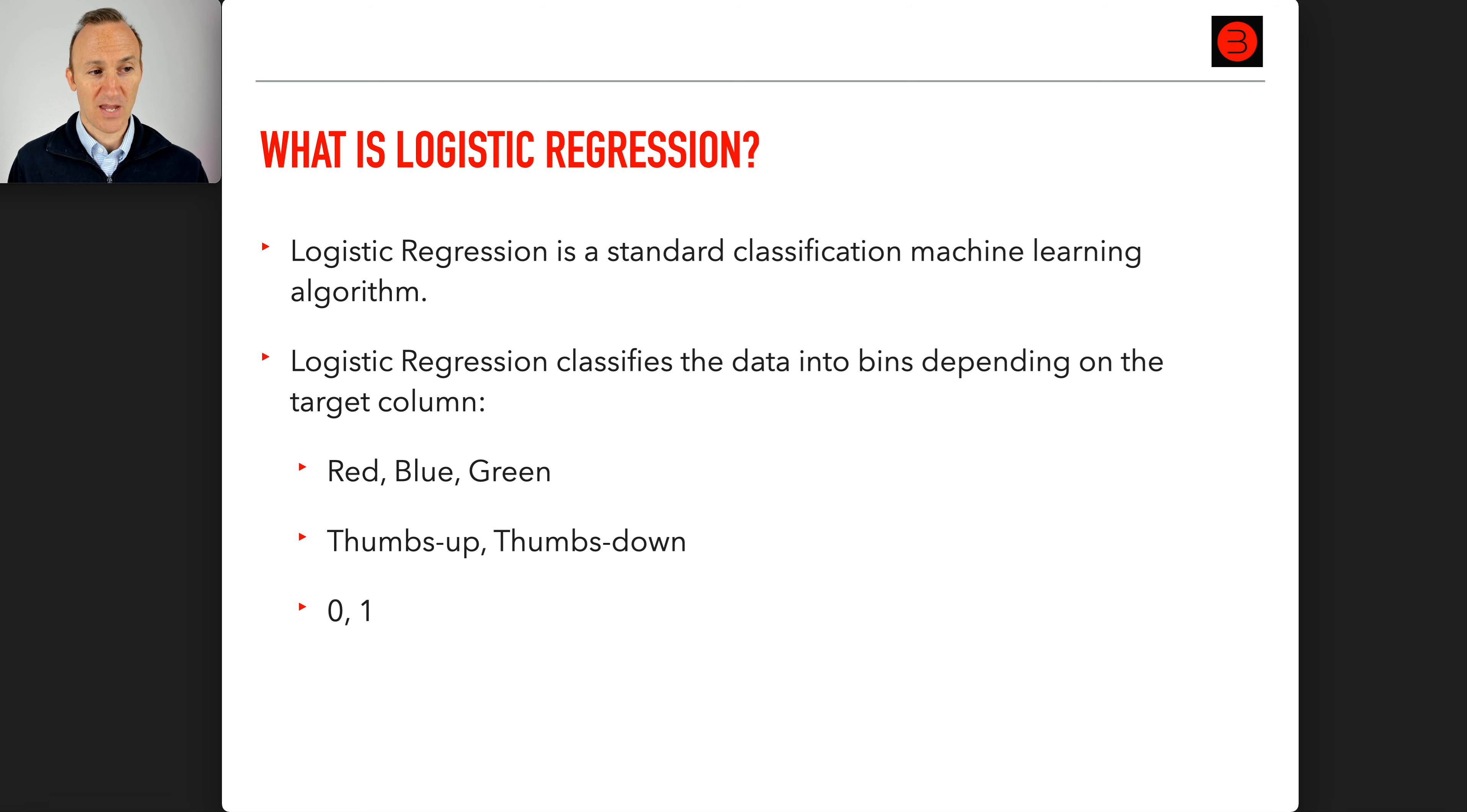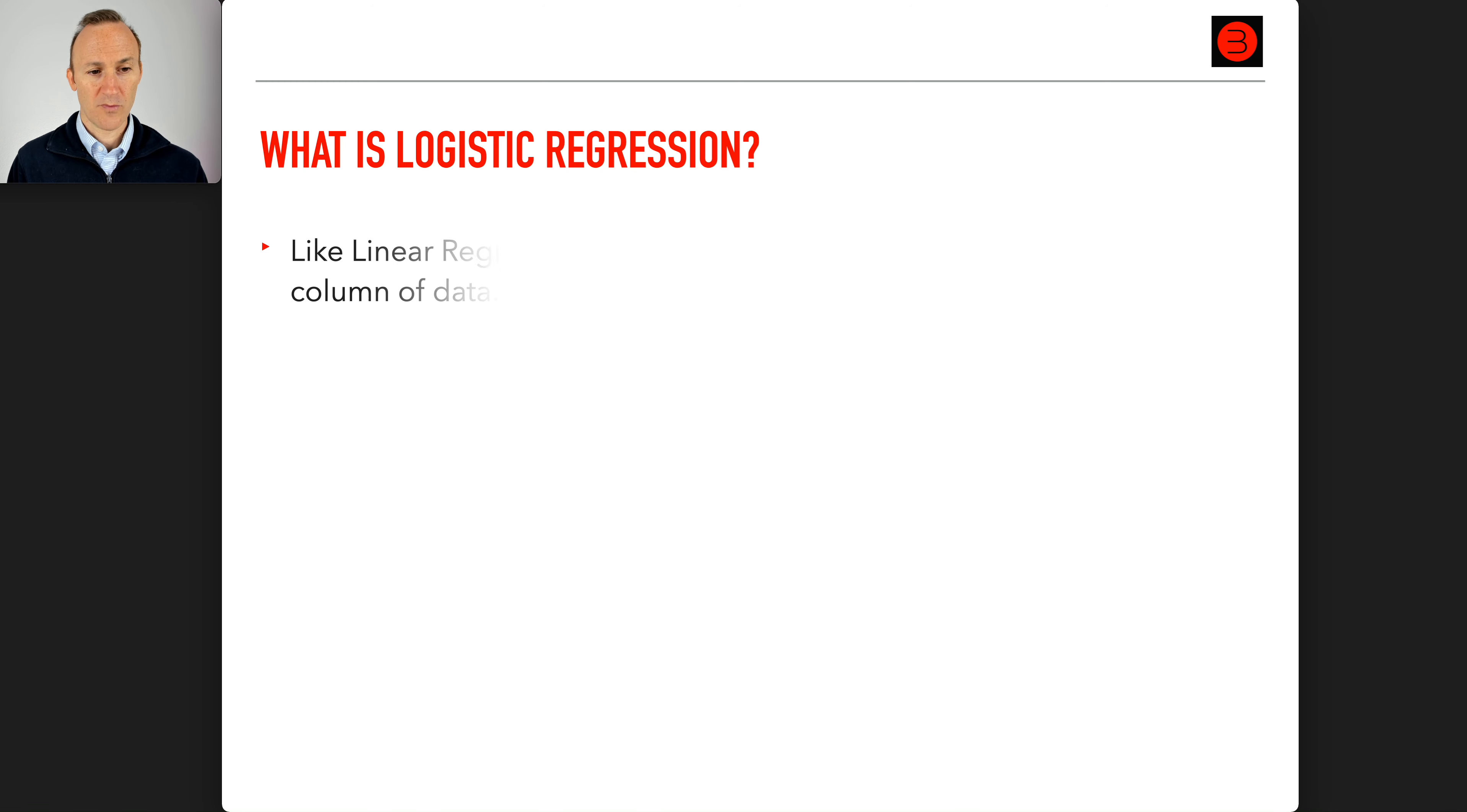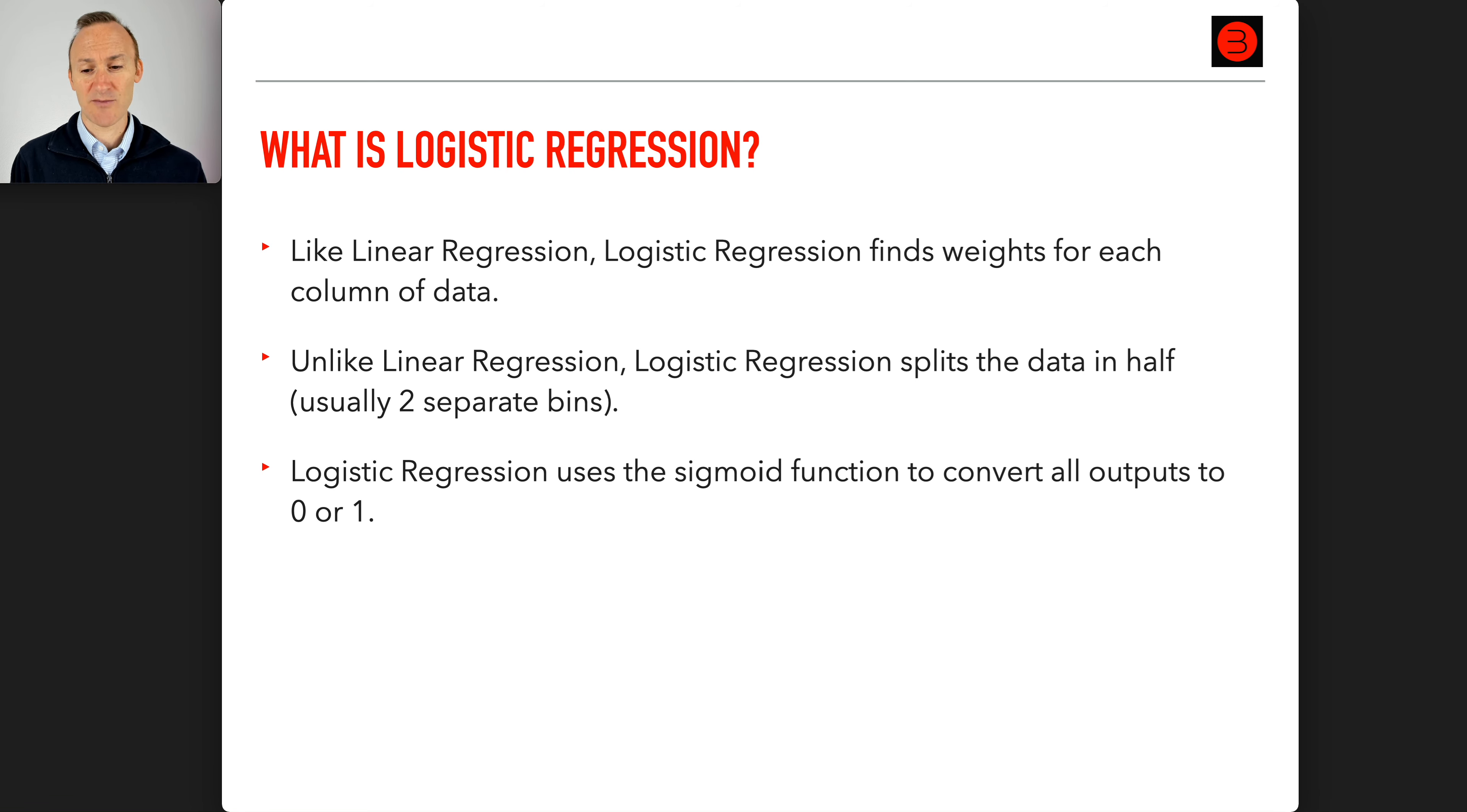Like linear regression, logistic regression finds weights for each column of data. Unlike linear regression, logistic regression splits the data in half, two separate bins, but as shown before it could be three and it could be more, but it's most commonly two. Logistic regression uses the sigmoid function to convert all outputs to zero or one. We'll look at that soon.